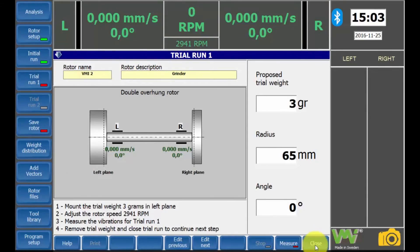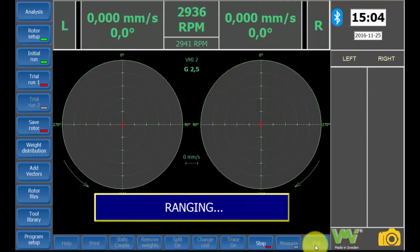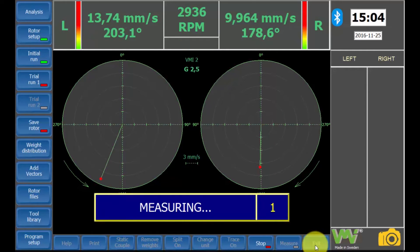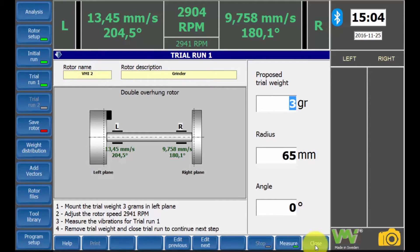Now start the machine. The measurement will begin when the rotation speed reaches the same level as at the initial run. Now stop the motor and wait until the RPM goes down to zero.